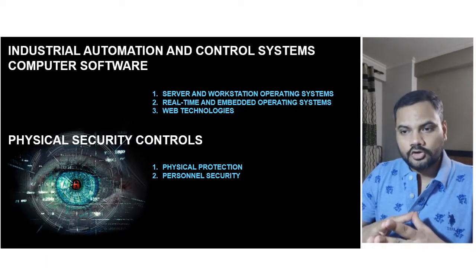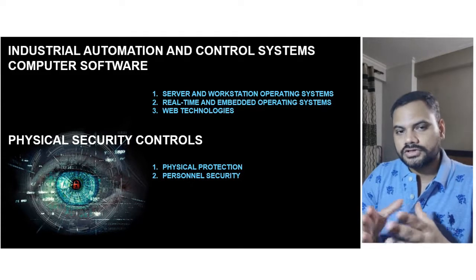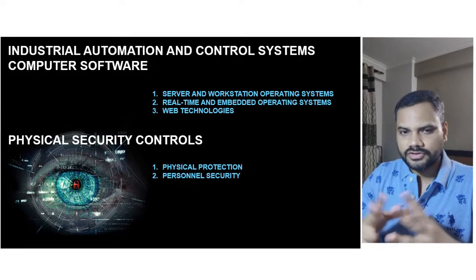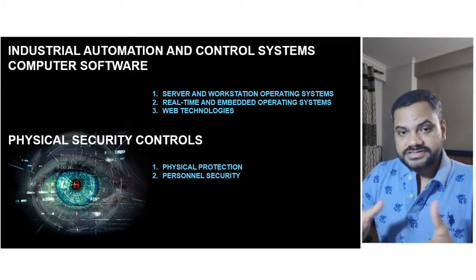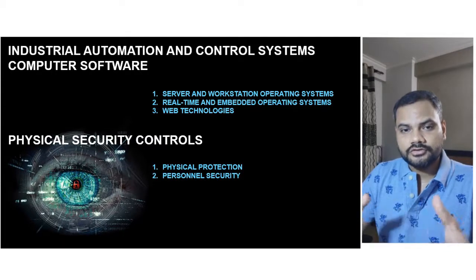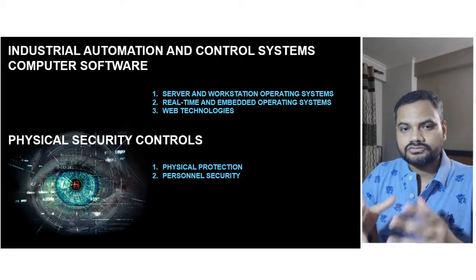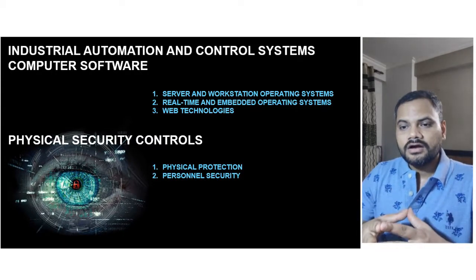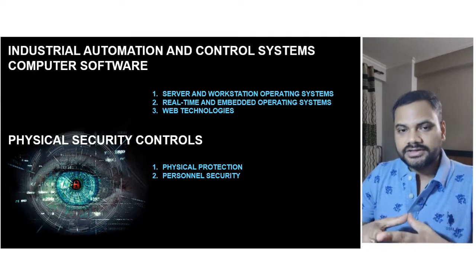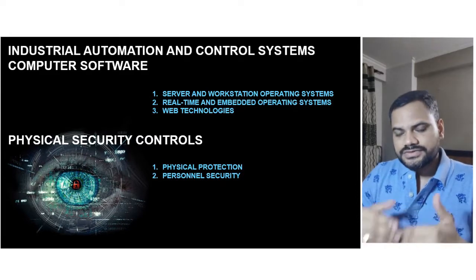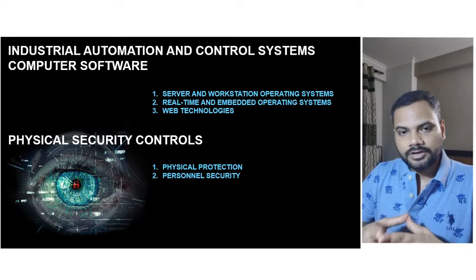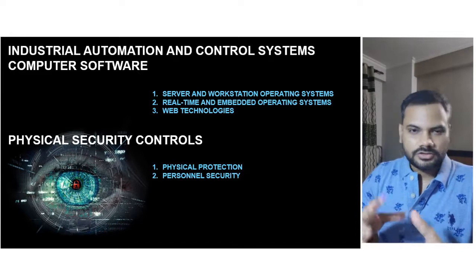The next section covers industrial automation and control system software. In the ICS environment, lots of software is used — such as server and workstation operating systems, which could be Windows servers, Windows workstations, or proprietary software from HMIs and SCADAs. It also gives guidelines about real-time and embedded operating systems and web technologies.